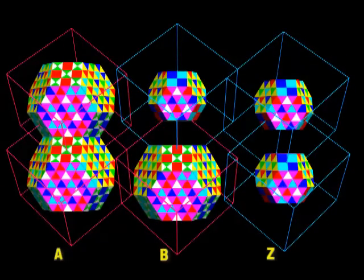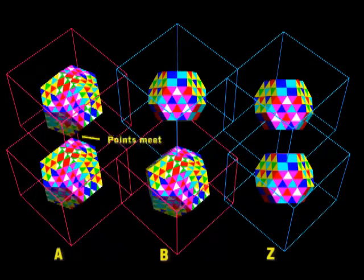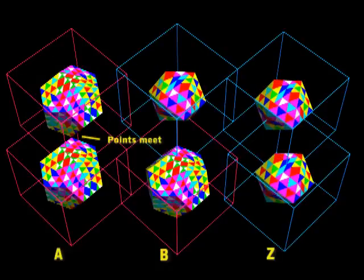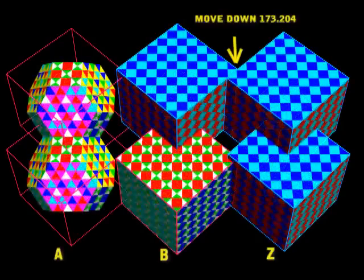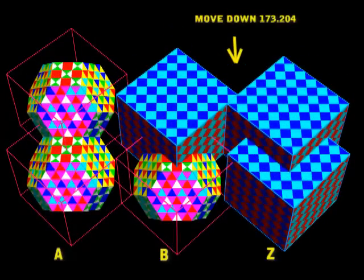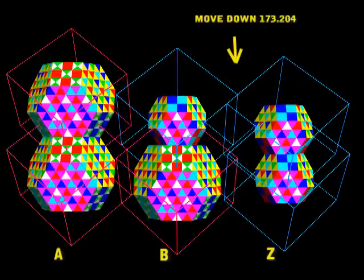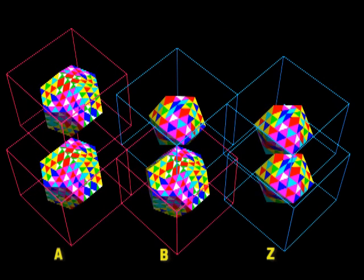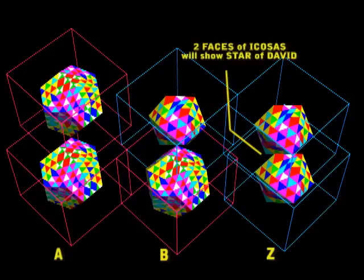And when you change to the dodecahedron, the two points meet equally. Now we'll bring the B and the Z together 173. If you look at B, the point of the dodeca fits perfectly in the centre of the face of the icosa. Now in the Z, you'll notice that the two icosa faces are bucked perfectly together and they form a Star of David.